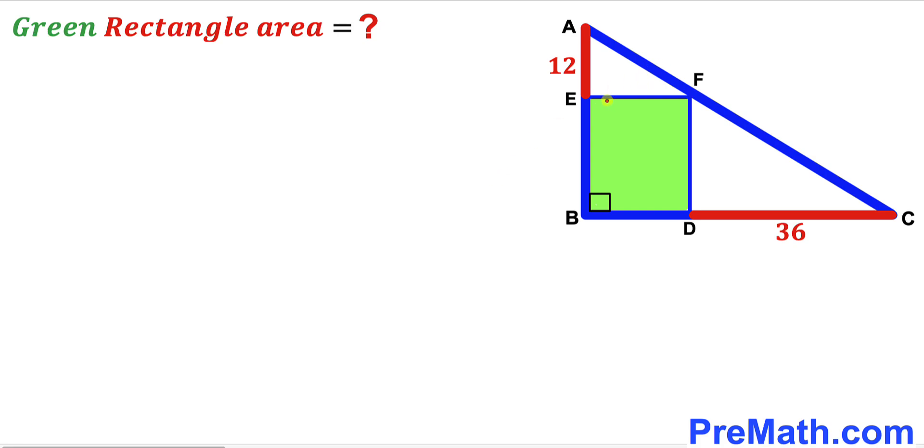Welcome to PreMath. In this video we have this green shaded rectangle EFDB fully confined in a right triangle ABC, as you can see in the diagram. This vertical segment AE is 12 units, whereas this horizontal segment CD is 36 units. Our task is to calculate the area of this green shaded rectangle EFDB.